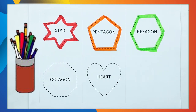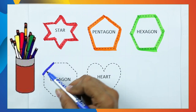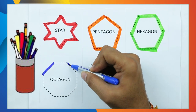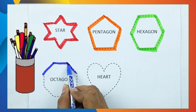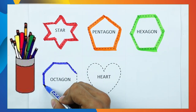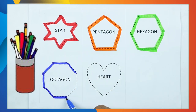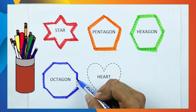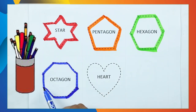Octagon. One line, two line, three line, four, five, six, seven, eight. Eight lines means octagon.